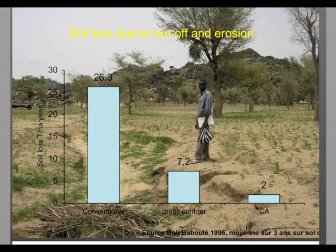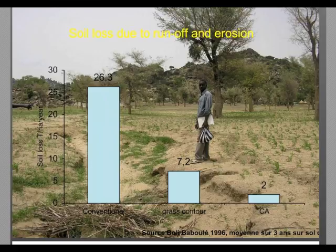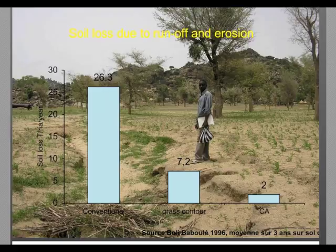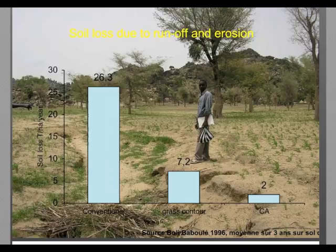A PhD thesis by Boli-Bargule measured the quantity of soil loss according to different soil management practices in Northern Cameroon. With conventional tillage, 26 tons per hectare per year of soil is lost. With anti-erosion structures such as grass contours, 7 tons per hectare is still lost. With CA, the loss is only 2 tons per hectare — demonstrating that CA significantly reduces soil loss.